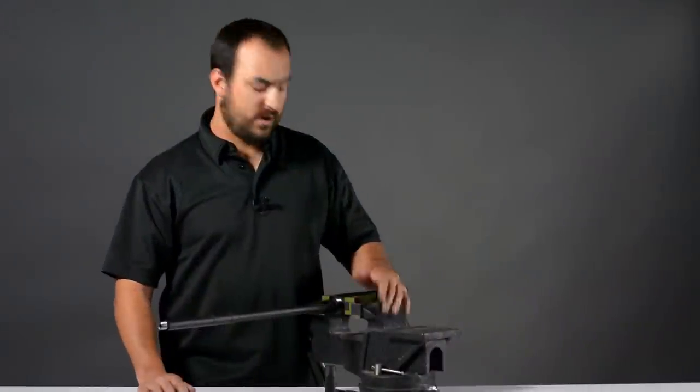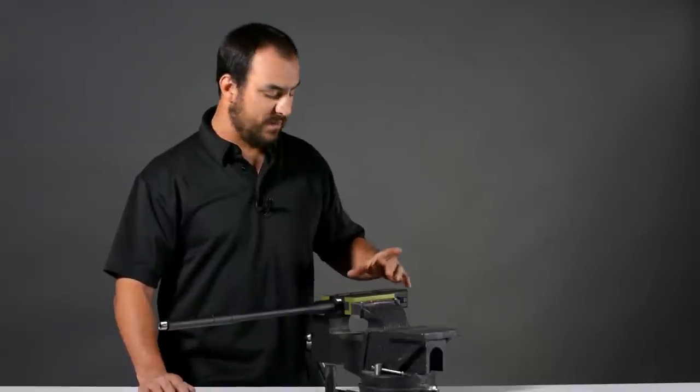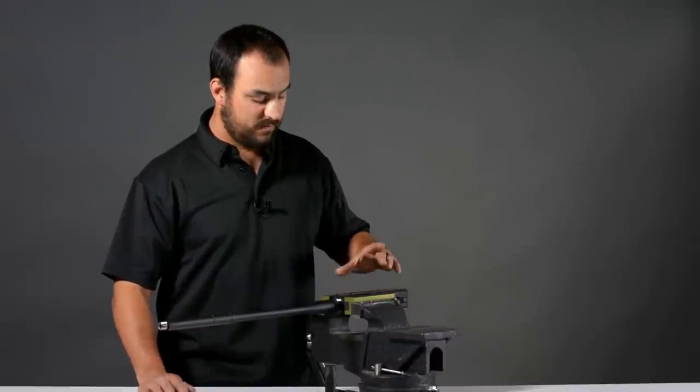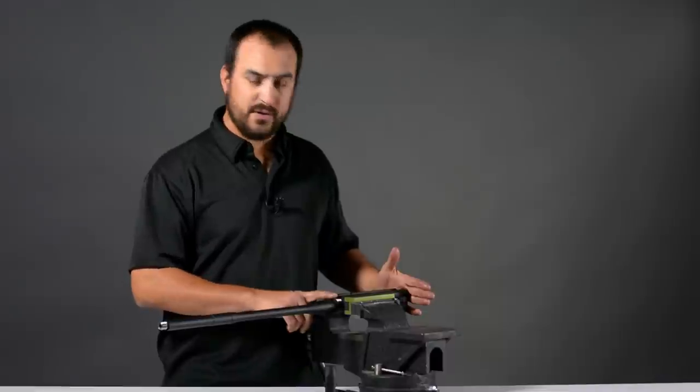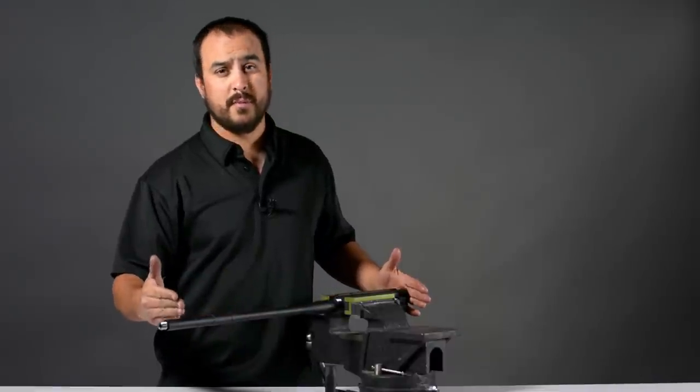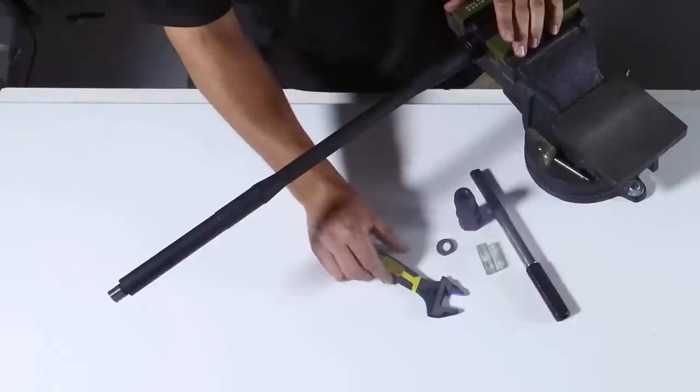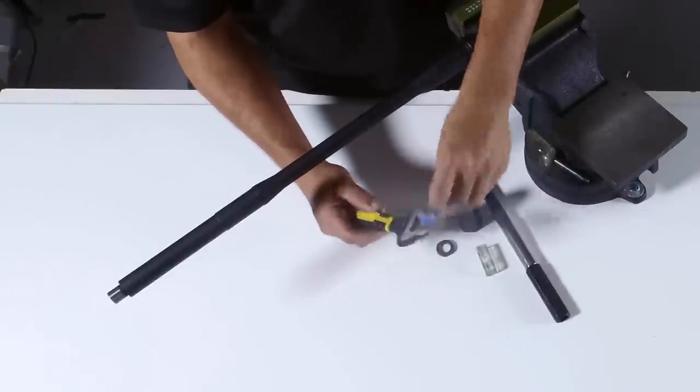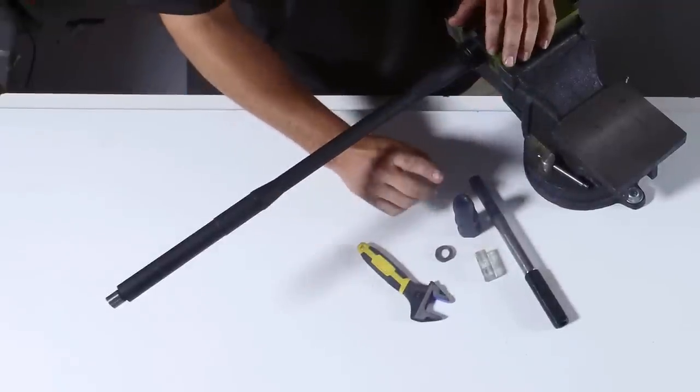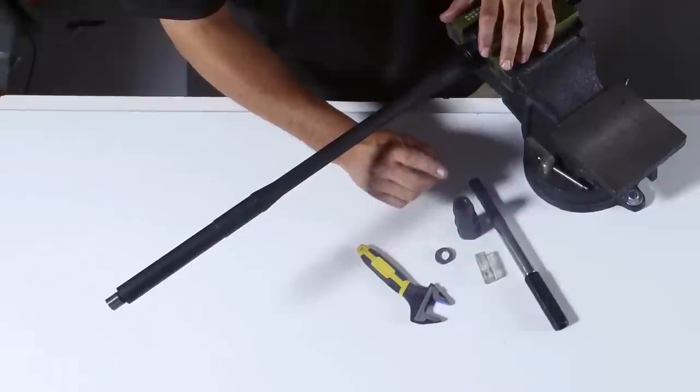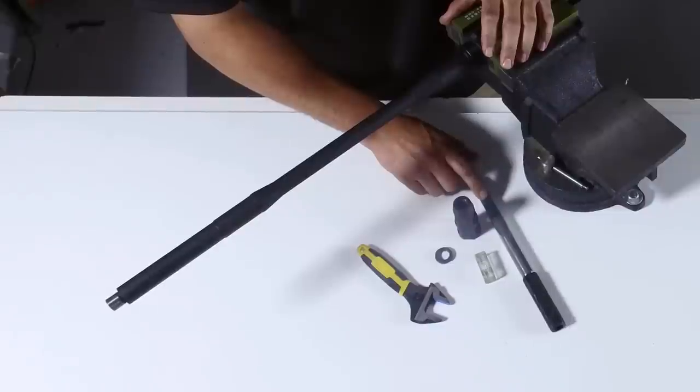First off, we're going to start with securing our upper receiver into the vise using some vise jaws. I recommend using the JP vise jaws. As you'll notice in the setup here, we don't have a barrel nut on here because today everything's going to be done in a soft build for educational purposes. And we're going to be using our tools. We have a crescent wrench with tape on here to ensure that we don't scratch any surfaces. We're going to use our jam nut, our JP comp, our level, and our JP comp wrench.